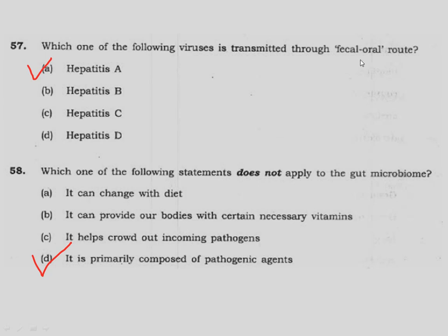The fecal-oral route means that when there is fecal contamination or human excreta contamination — normally when people buy food from the streets and don't maintain hygiene — human fecal matter comes into contact with food. This is the fecal-oral route, and the virus transmitted this way is hepatitis A. So the correct answer is option A.